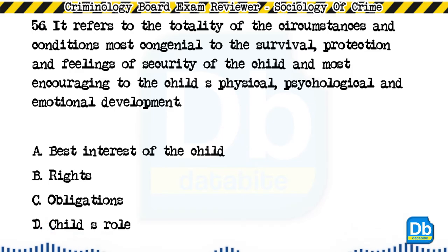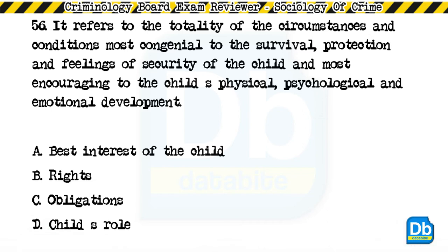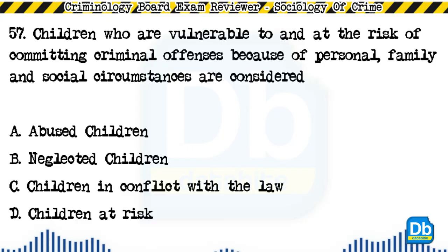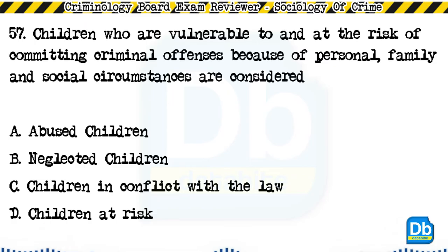Question 56: It refers to the totality of circumstances and conditions most congenial to the survival, protection, and feelings of security of the child, and most encouraging to the child's physical, psychological, and emotional development: a) best interest of the child, b) rights, c) obligations, d) child's role. The answer is A, best interest of the child. Question 57: Children who are vulnerable to and at risk of committing criminal offenses because of personal, family, and social circumstances are considered: a) abused children, b) neglected children, c) children in conflict with the law, d) children at risk.